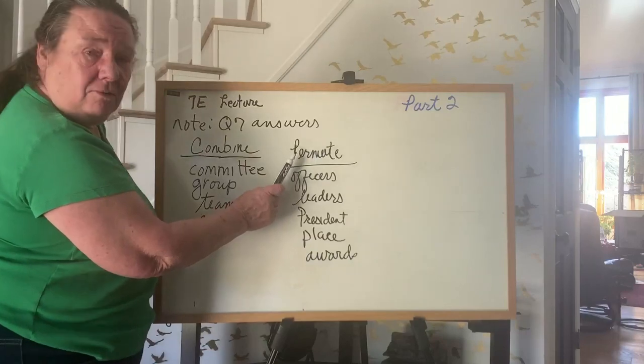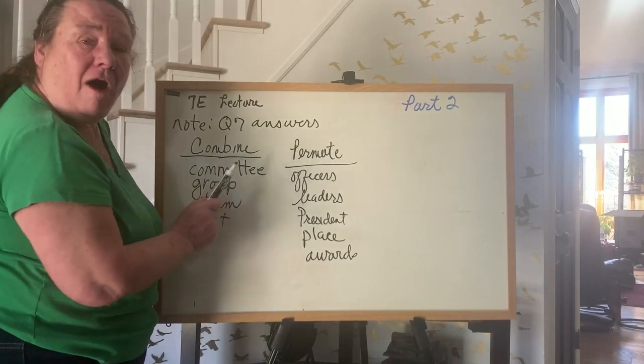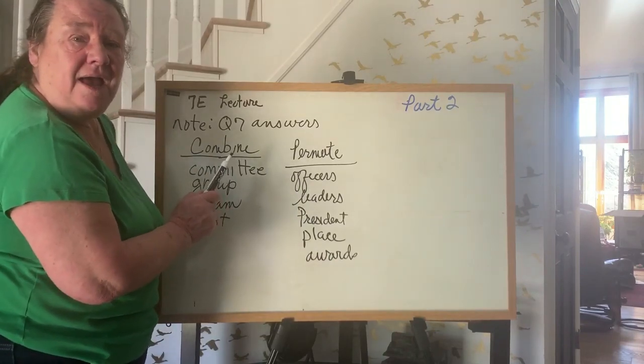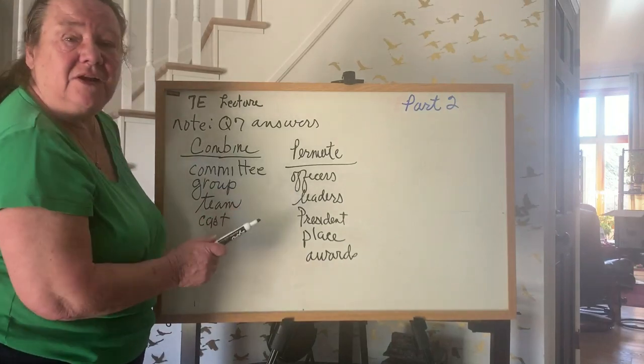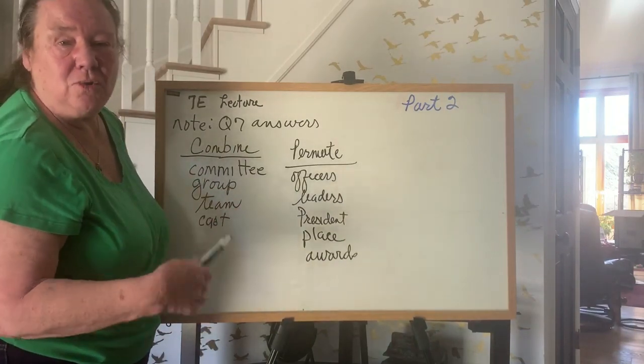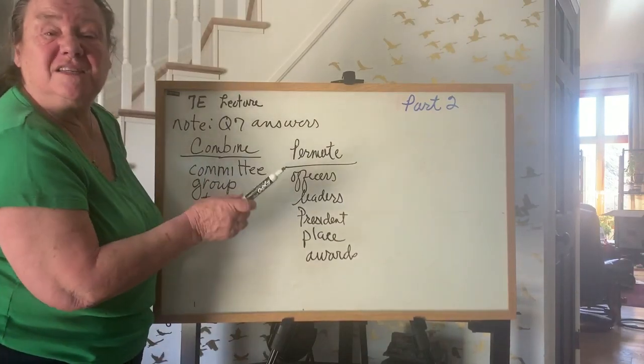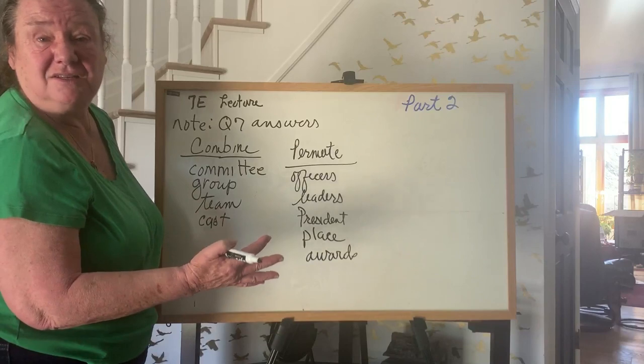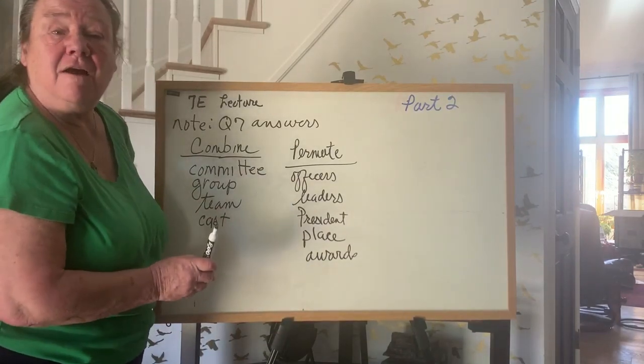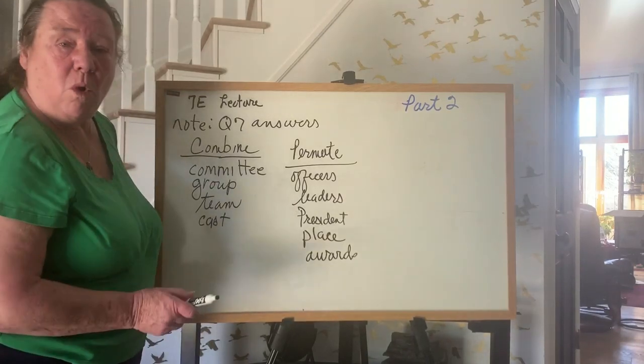Over here with permutations where the order matters, we have officers, a captain, a co-captain, and a manager. We have leaders, a captain, a co-captain, and a manager. We have like presidents, like a slate, president, vice president, and treasurer. We have places, first place, second place, third place.